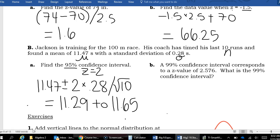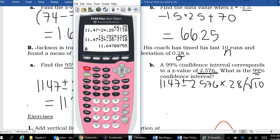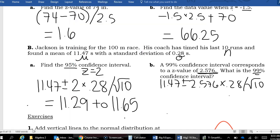If I want to do the exact same math, but I want to be 99% sure of what his final score will be, I'm going to just swap out the Z value for 2.576. So I'll rewrite it 11.47 plus or minus 2.576 times 0.28 divided by root 10. So I have 11.70 if we round that.